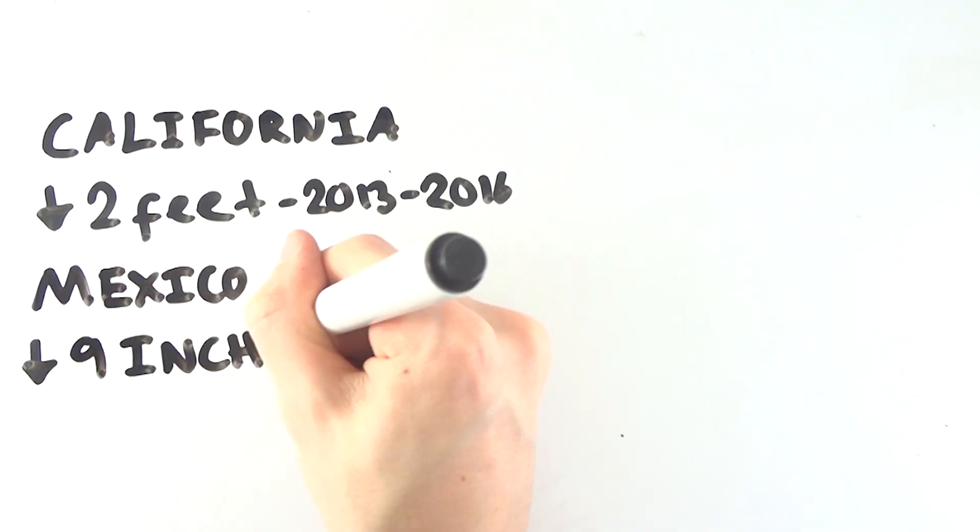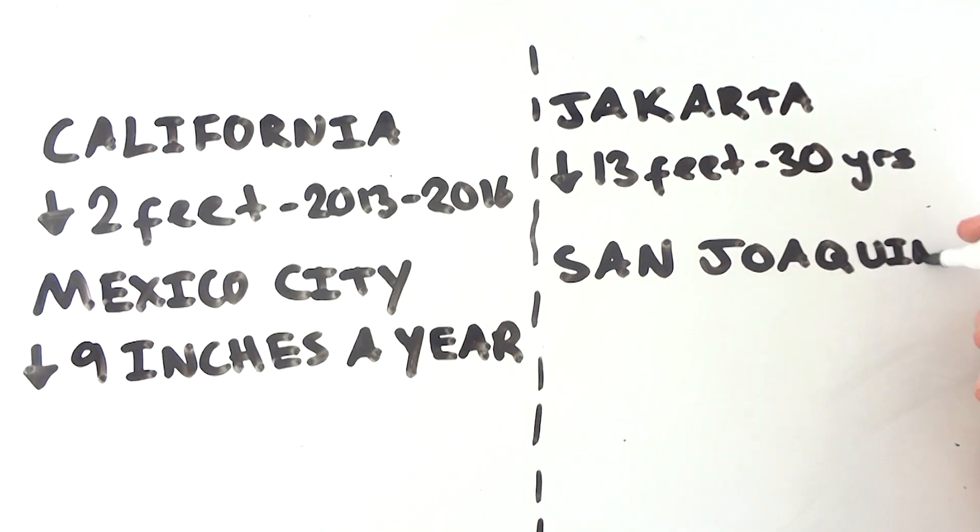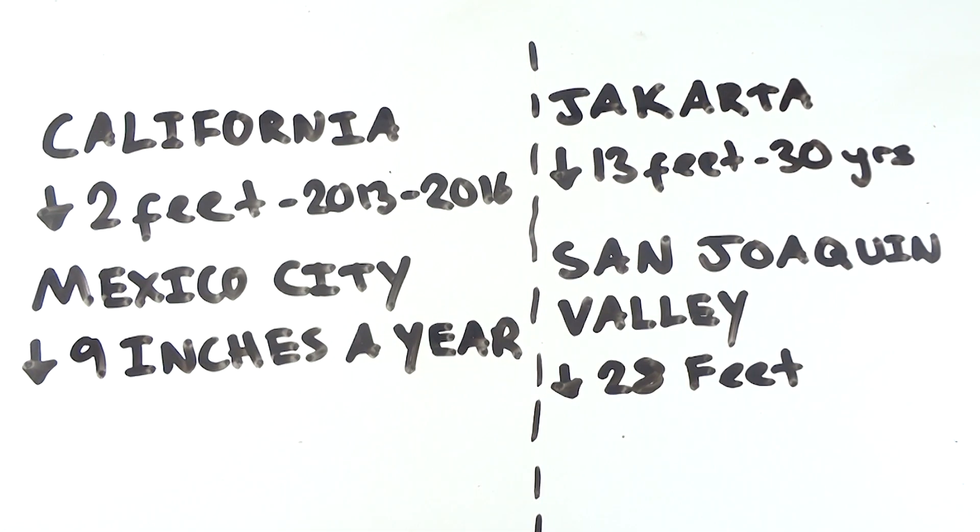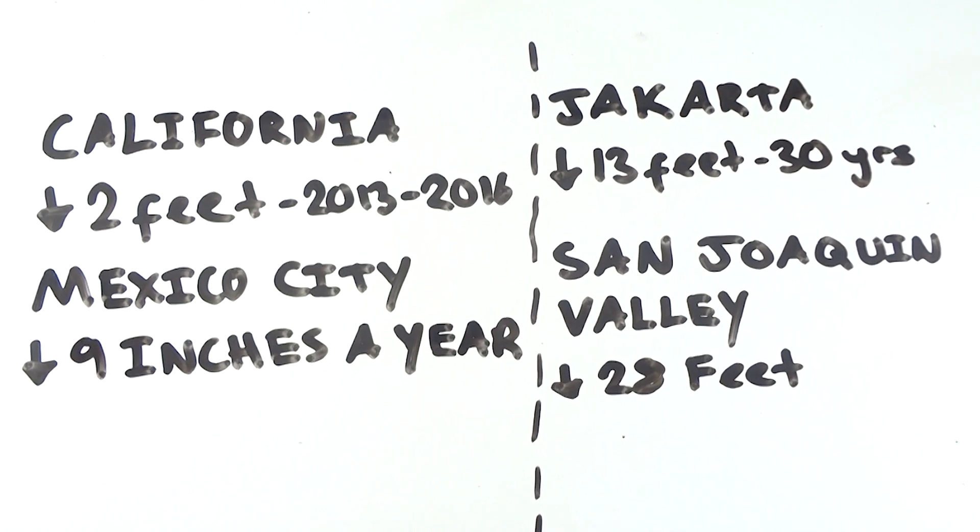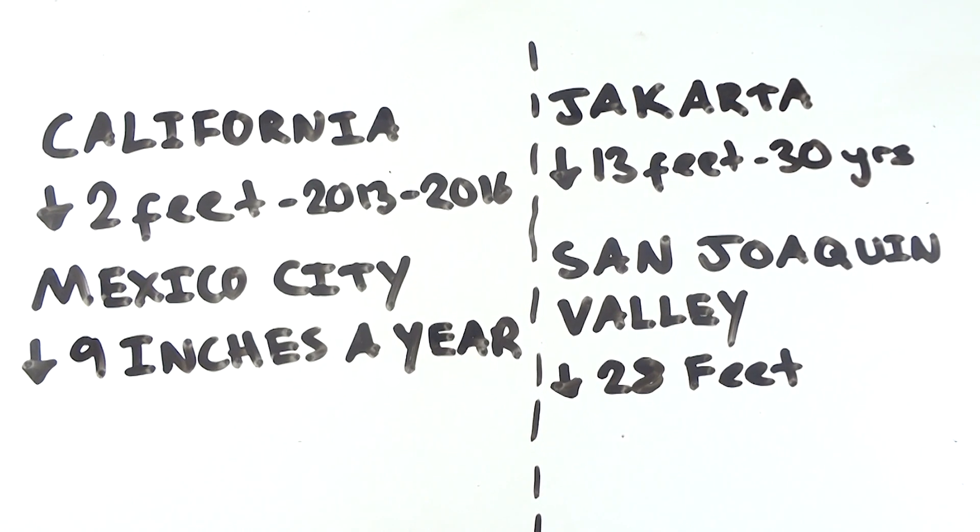Beijing isn't the only place to be experiencing this issue. Parts of California sunk as much as 2 feet between 2013 and 2016. Parts of Mexico City are sinking as much as 9 inches per year, and since the 1920s part of the California San Joaquin Valley have sunk as much as 28 feet.